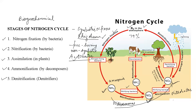The next stage is assimilation. The nitrate and other converted forms are now accessible forms of nitrogen, which means plants can easily take them up. The absorption of nitrogen by plants is known as assimilation. Since there are animals in the food chain that feed on these plants, nitrogen also gets into animal bodies — that too is part of assimilation. So assimilation involves both plants taking up accessible nitrogen forms and animals obtaining nitrogen by feeding on plants.